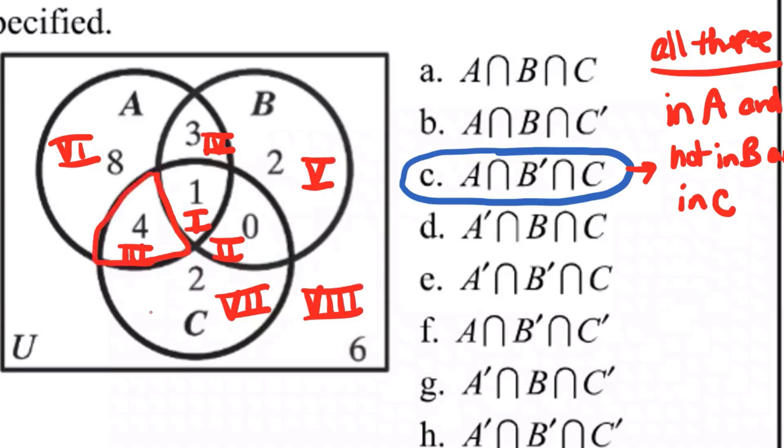that's in A, it's in C, and it's not in B. Good. And what else did you say? Six.